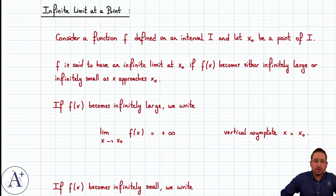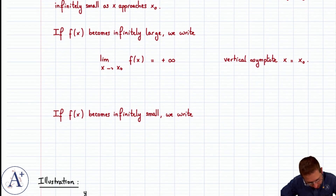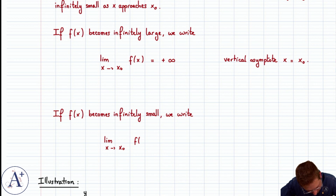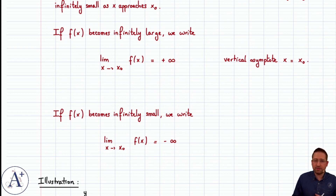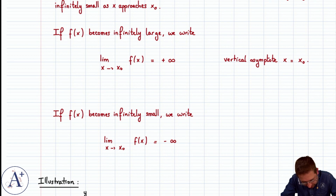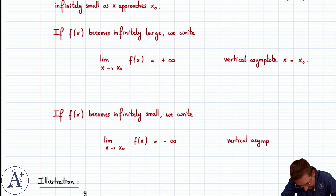Of course, f could become infinitely small. In that case, what we write is that the limit as x approaches x0 of f of x is equal to minus infinity. In other words, you could pick any number, however small — you can make it as negative as you can imagine. f of x will eventually be smaller than that number; you'll just have to bring x a little closer to x0. Eventually f of x will be smaller than that finite number. So f becomes infinitely small, and we write that the limit of f of x at x0 is minus infinity. The graph also then has a vertical asymptote, x equals x0.